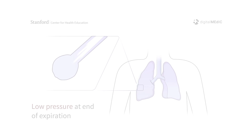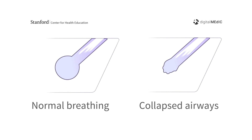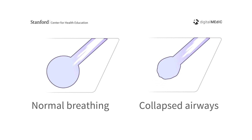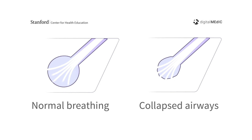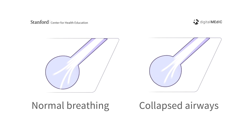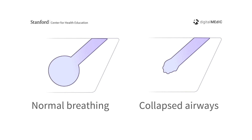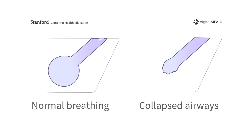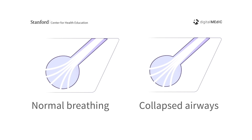The child generates increased pressure in order to compensate for the collapsed alveoli at the end of expiration, resulting in grunting sounds. These sounds are heard when the child breathes out.